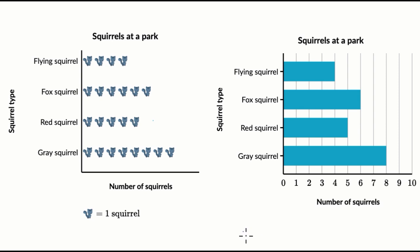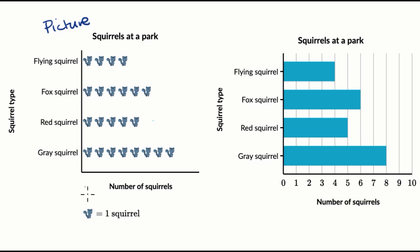The way that you would try to answer that — let's say you were to look at this graph on the left, which is a picture graph. You might ask, where does that name come from? Well, it's using pictures. These pictures usually are some type of symbol, or in this case, an actual picture of a squirrel that shows you the things that we're counting. Before you just count the pictures in the picture graph, it's important to look at the key and make sure that you know what each squirrel picture represents. Here, each squirrel represents one squirrel.